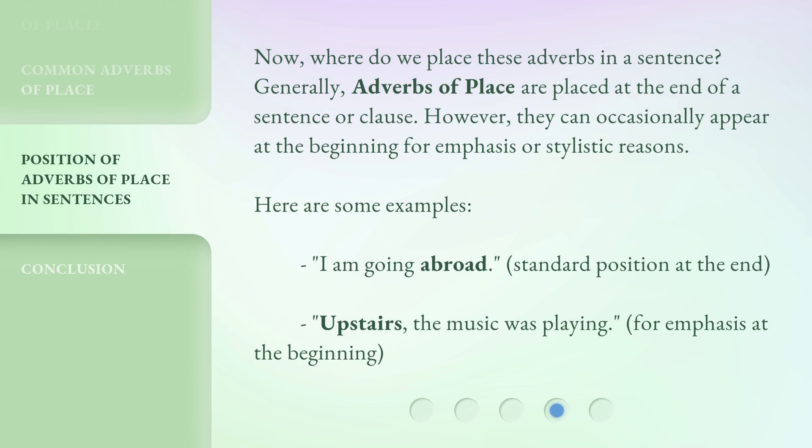Now, where do we place these adverbs in a sentence? Generally, adverbs of place are placed at the end of a sentence or clause. However, they can occasionally appear at the beginning for emphasis or stylistic reasons. Here are some examples: 'I am going abroad' — standard position at the end. 'Upstairs, the music was playing' — for emphasis at the beginning.